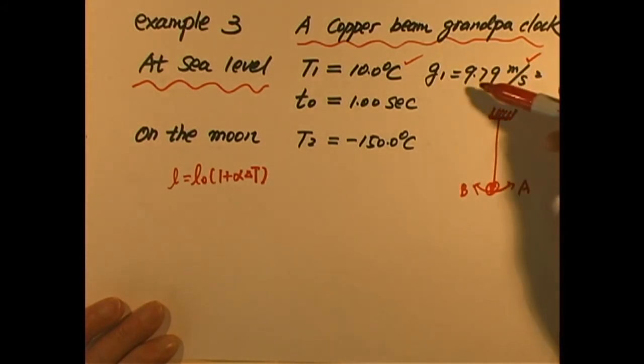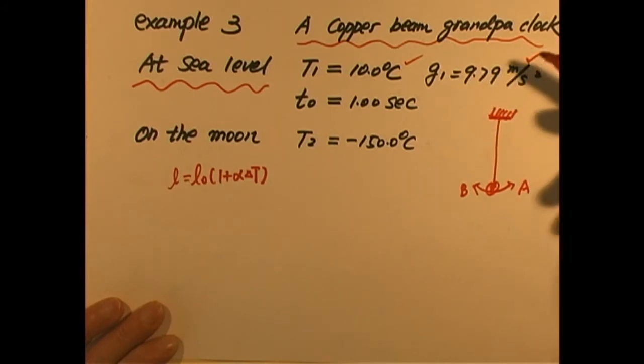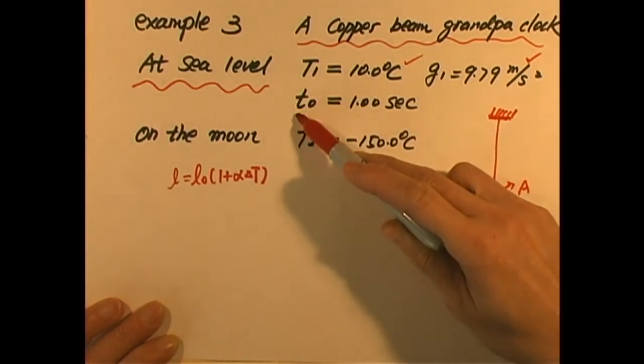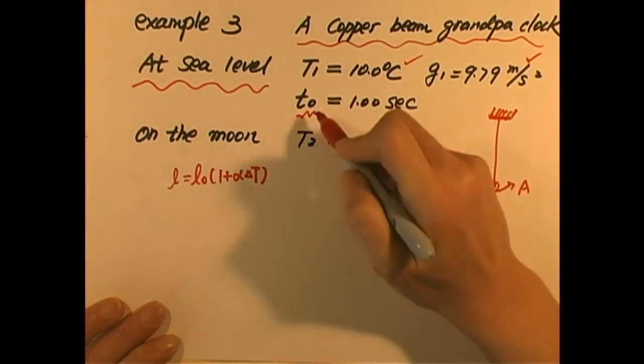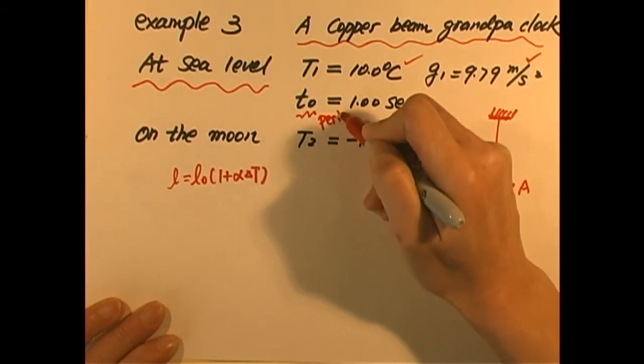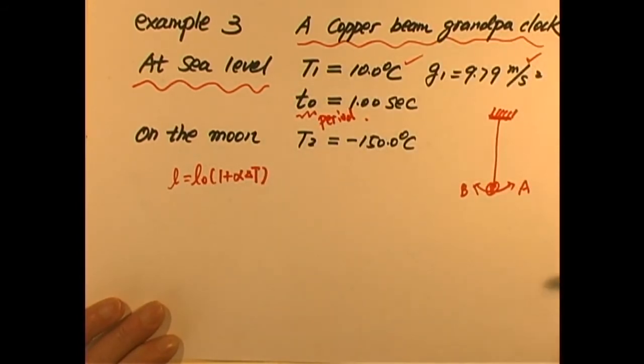Our question is if we have such a grandfather clock that at the surface of the earth, at the sea level, let's say, at a temperature, let's make 10 degrees Celsius, and g is 9.79 meters per second squared. Obviously, this is not equator because the equator is around 9.73, so let's say Los Angeles, you know, sea level. We get this g, and this is the period of this simple pendulum. Let's say it's 1 second, 1.0 second, we'll give all three sig figs.